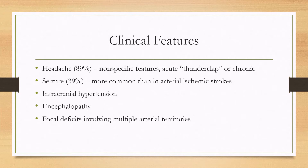Intracranial hypertension can be a manifestation, and this is why in patients presenting with what is thought to be idiopathic intracranial hypertension, an MRV is obtained to rule out this disease. Encephalopathy can occur as well, and focal deficits can occur which relate to the location of the venous thrombosis. Especially if focal deficits involve multiple arterial territories, then this diagnosis can be considered.